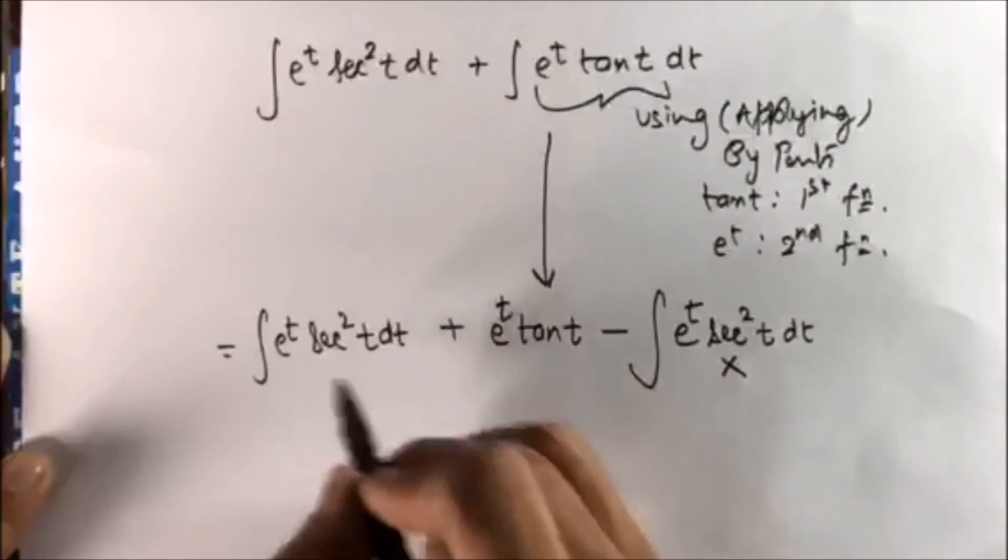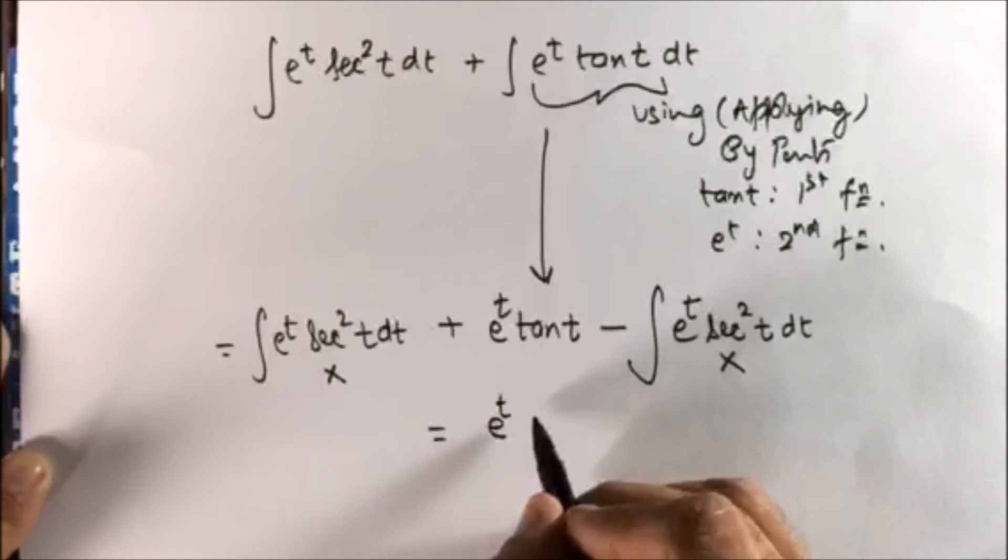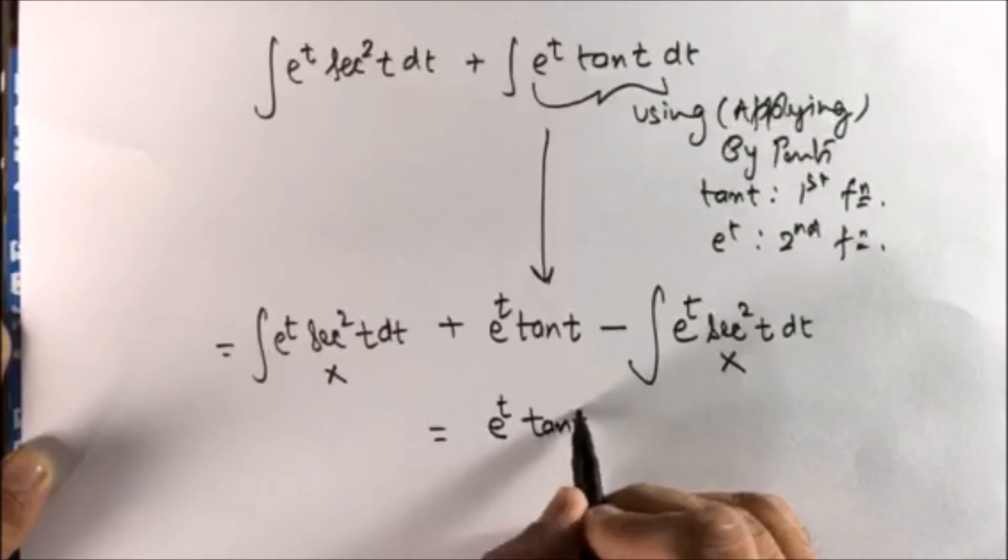Just see, this is negative of this. So we can cancel this and our answer is e to the power t tan t plus c.